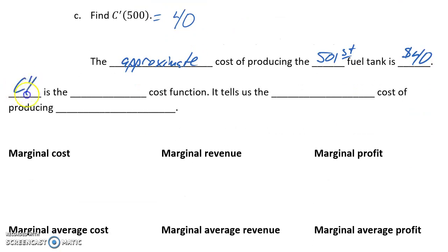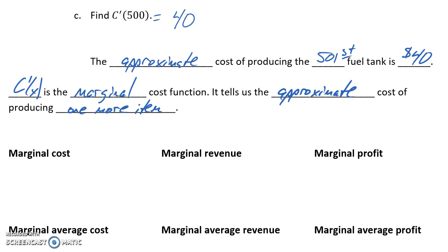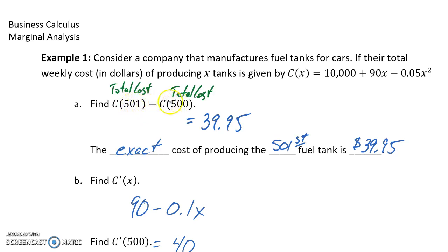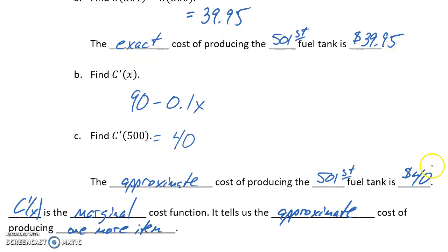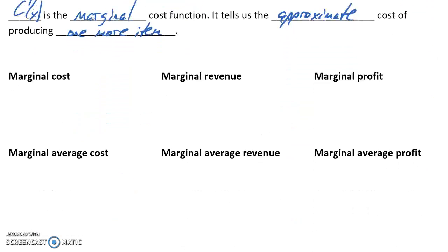When we look at c prime of x, we refer to that as the marginal cost function. It tells us the approximate cost of producing one more item. By knowing the derivative of a function, we can evaluate it at a single point rather than evaluating the original function at two different points and taking the difference — a streamlined process for getting a result very close to the exact value. We have our marginal cost function, which is just the derivative of the cost function. Similarly, we'll have a marginal revenue function and a marginal profit function, which are just the derivatives of those respective functions.